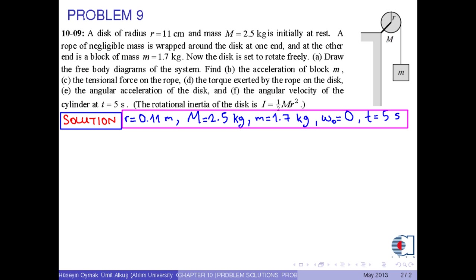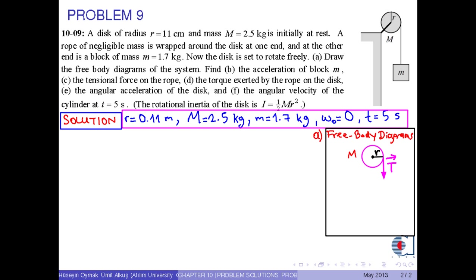In part A, we draw the free body diagrams for each object. Since the disk is rotating, we cannot represent it by a point. We draw it as it is. The only force acting on the disk is the tensional force on the rope, and it is a downward force.